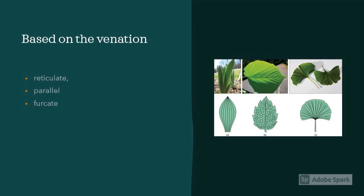Now let's see how leaves are classified based on their venation. The venations are reticulate, parallel, and furcate. The example of reticulate venation is papaya, the example of parallel venation is bamboo, and the example of furcate venation is fan palm.